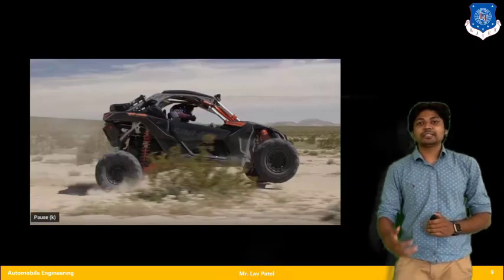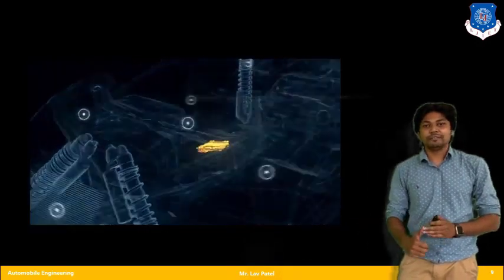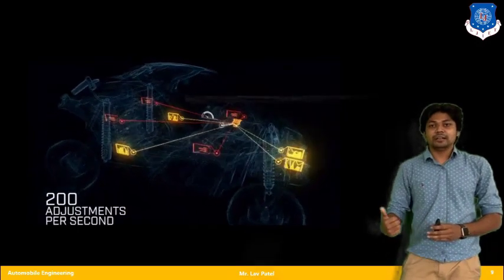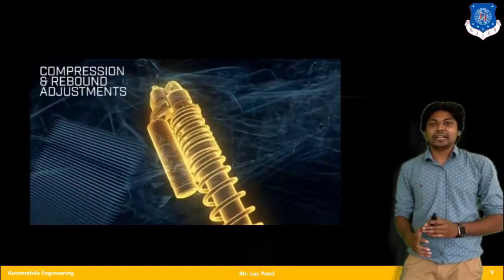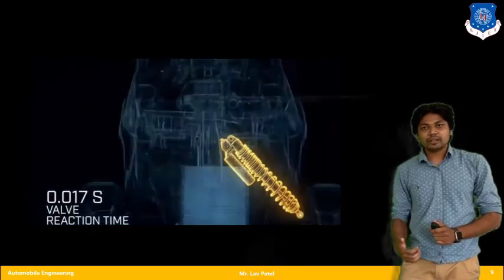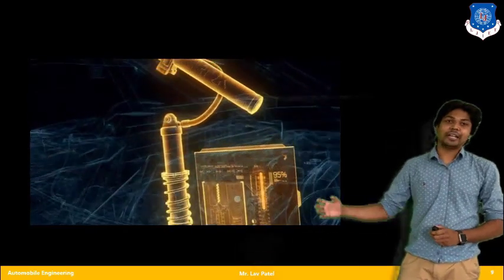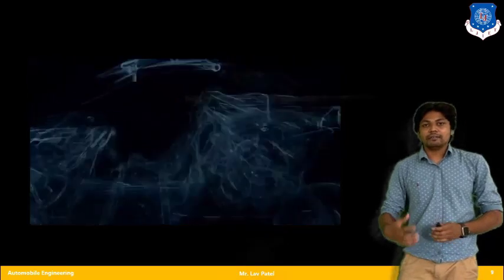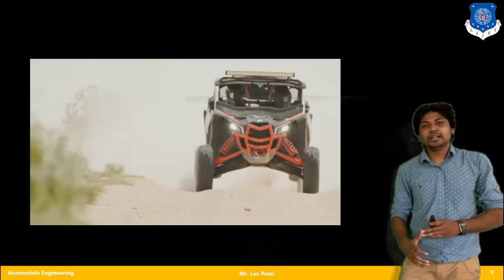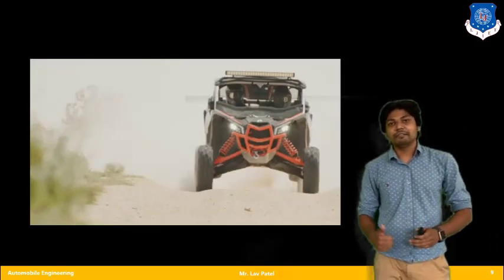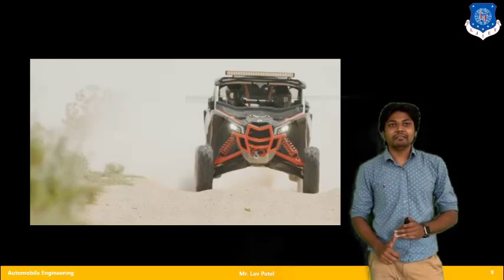The video shows how the semi-active suspension gives very good performance characteristics in an off-road vehicle. Several components like controllers and spring adjustments are present. The reaction time is very less due to effective controllers. By taking such controllers, we get smooth ride performance — not a jerky ride — even in off-road conditions. So these are the highlights of active suspensions and semi-active suspension systems.